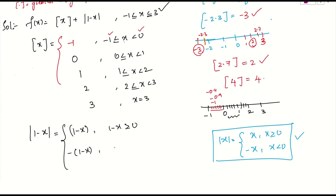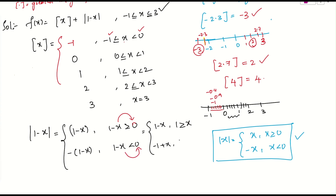Rearranging the conditions: mod(1 minus x) = (1 minus x) when x ≤ 1, and equals (minus 1 plus x) when x > 1. So the breakpoint for the modulus part is at x = 1, giving us (1 minus x) for x < 1 and (x minus 1) for x > 1.